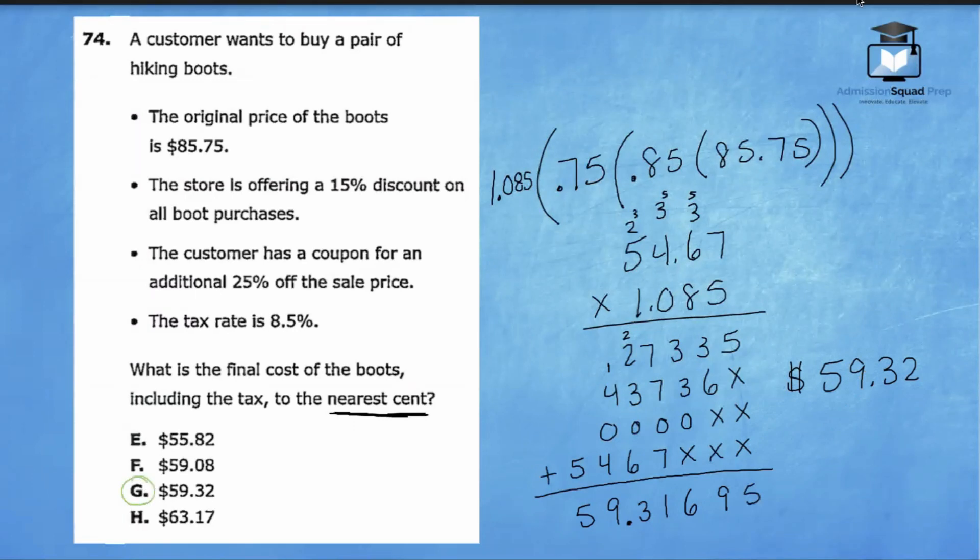Now this problem was quite a doozy, but just try your best to incorporate as many shortcuts as you can. Remember, instead of finding 15% and then having to subtract, you can find 85% of the total amount and then 75% of the total amount and then 108.5% of the total amount. That is the fastest way to solve this problem.